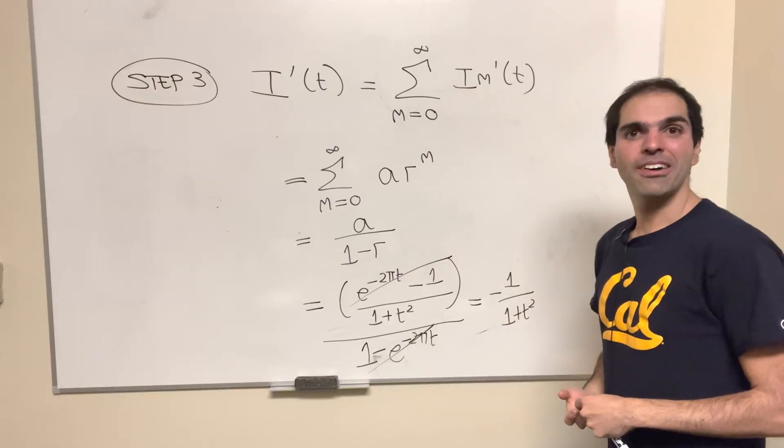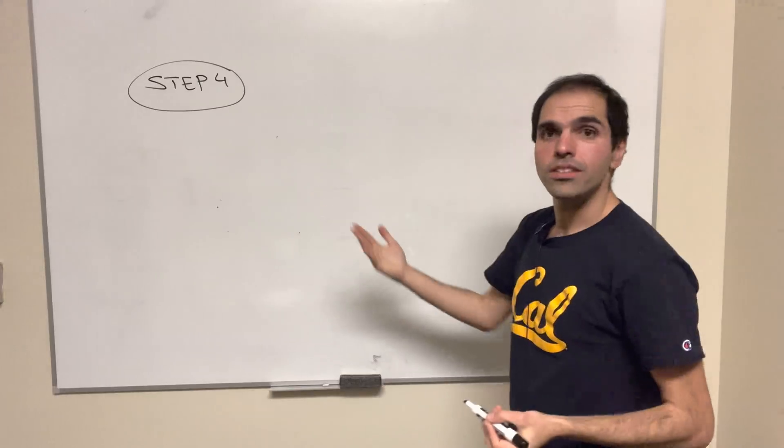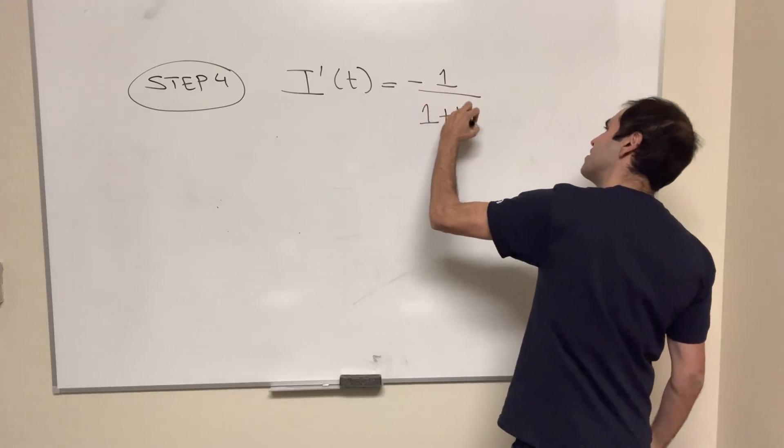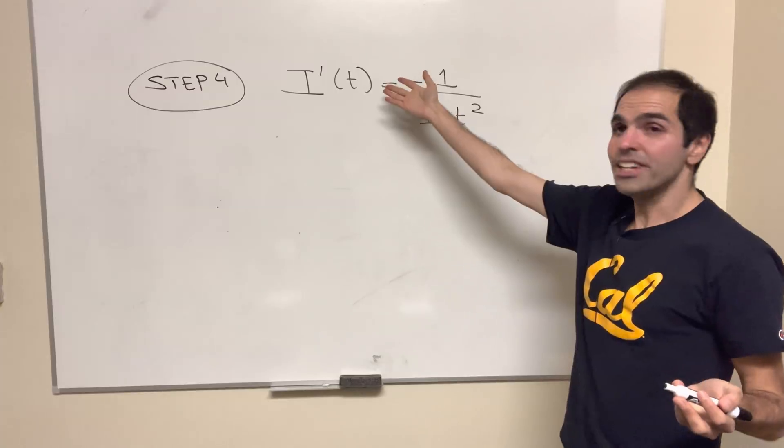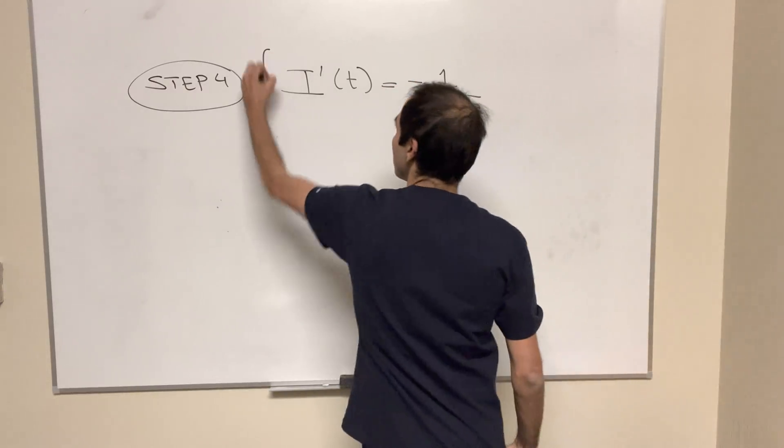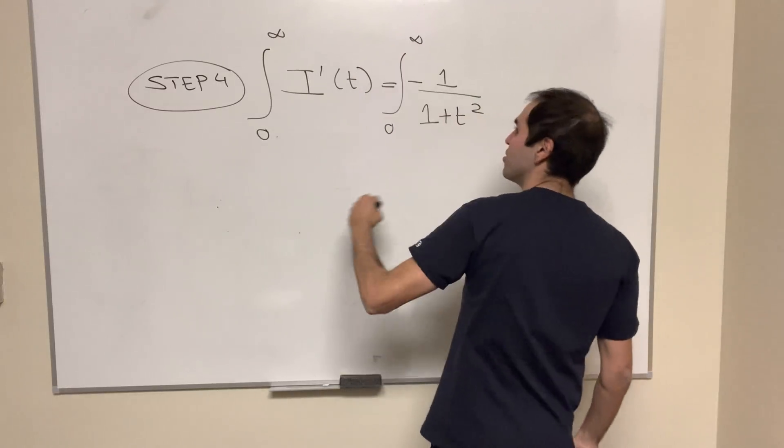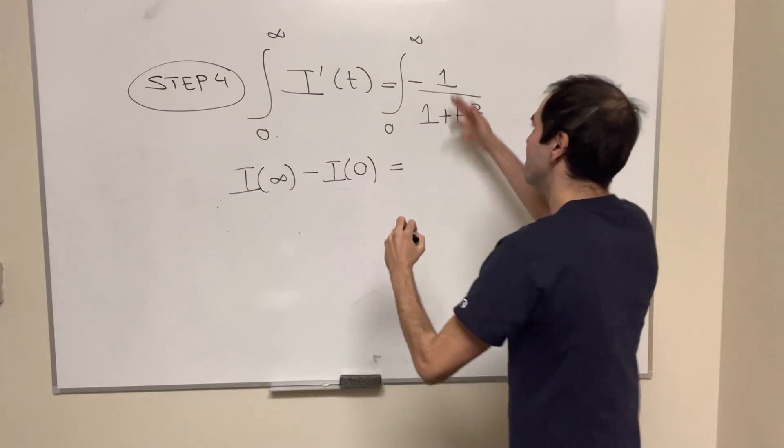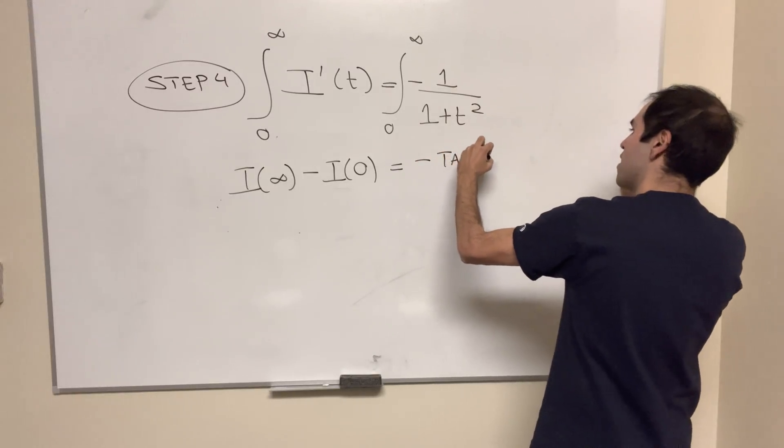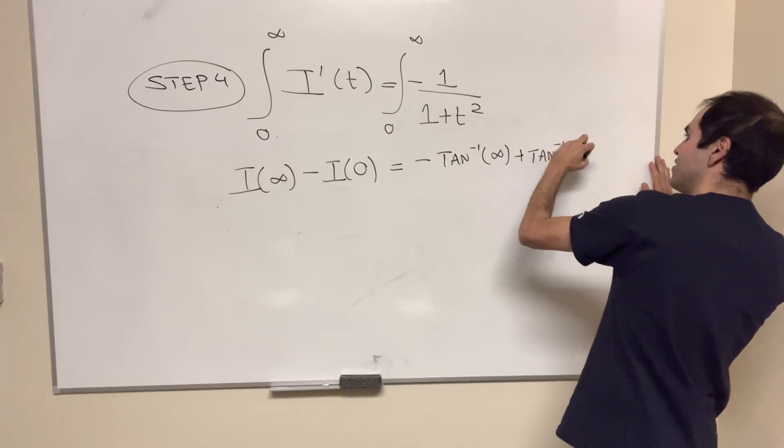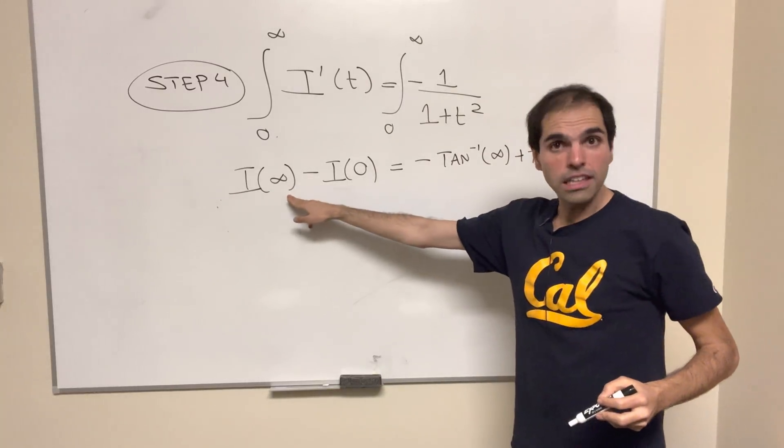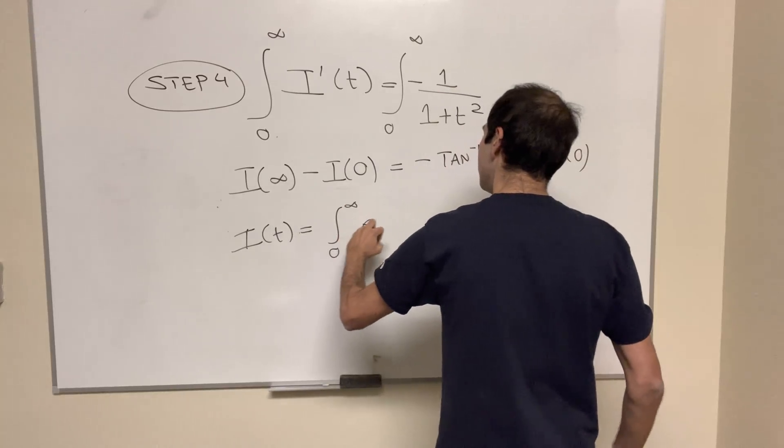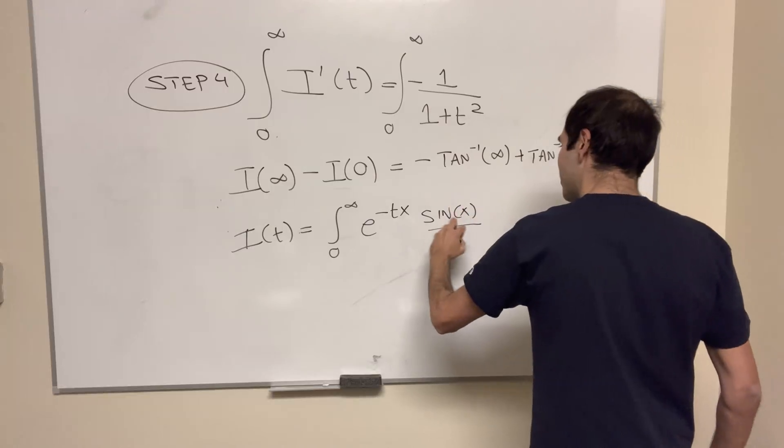So to end this drama, we just integrate. So once again, what have we found, we found that the derivative is -1/(1 + t²), and so finally what we do, we integrate from 0 to infinity, because then what we get, we get i(∞) - i(0), in this case is -arctan(∞) + arctan(0). Now, if you remember what i(t) is, it's just the integral from 0 to infinity, e^(-tx) sin(x)/x dx.